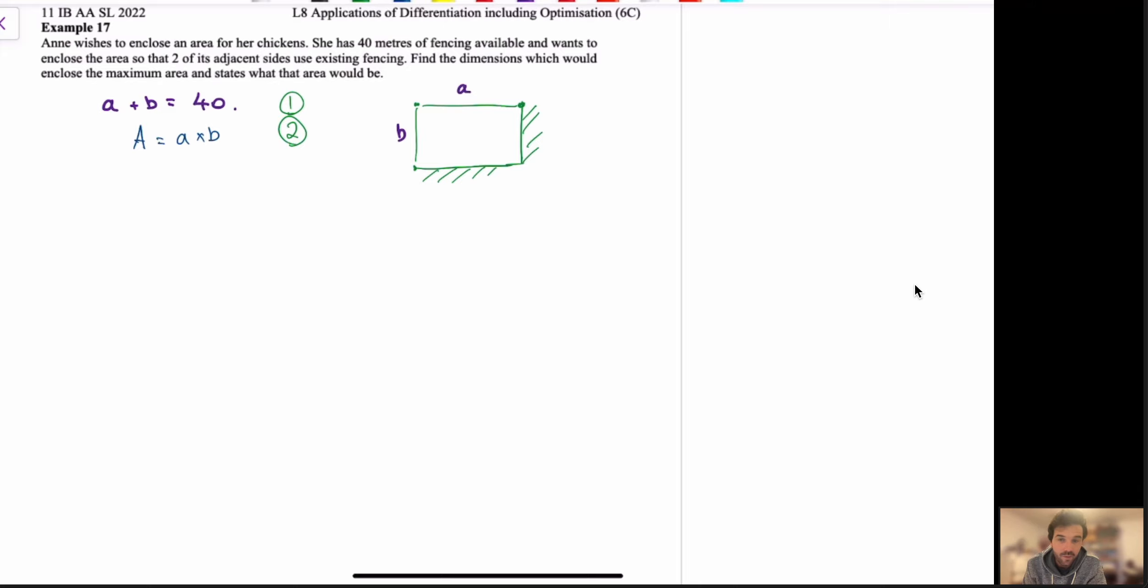Now, as we said before, we can't differentiate until we only have one variable at the moment, so we need to rearrange equation 1, and you can do it either way. I'm going to go B is equal to 40 minus A. Let's sub that into equation 2. Okay, expand. And there we go. We've got our, oh, that's equation 4, our next equation.